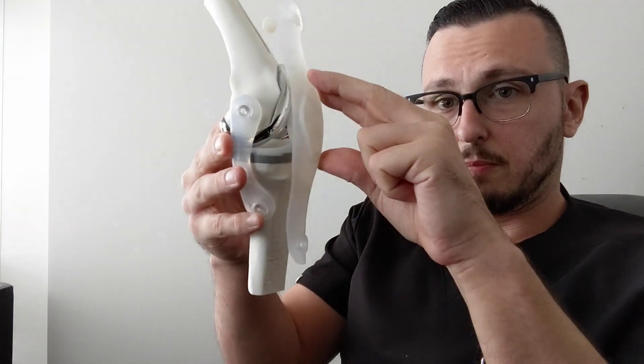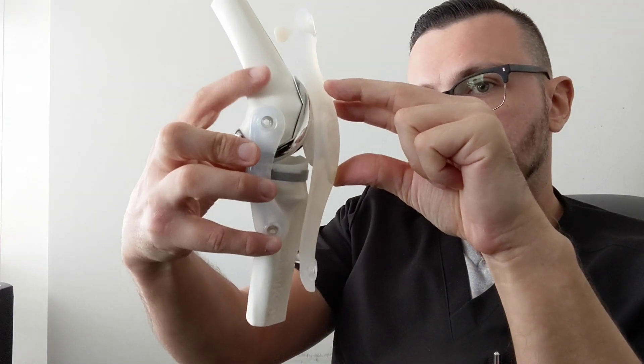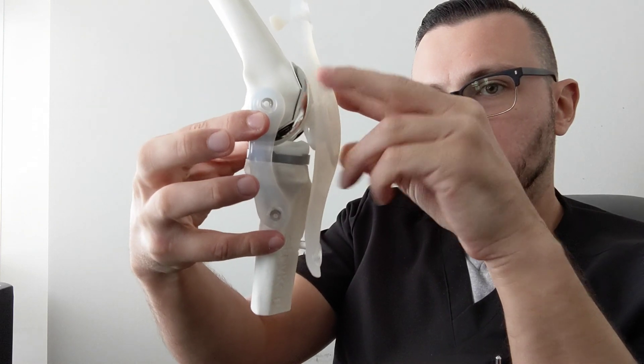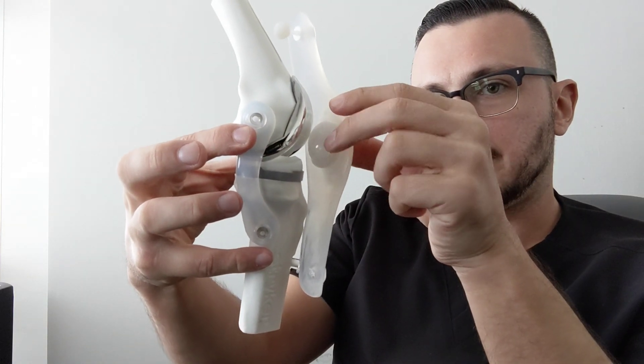A knee replacement is, I have a model here, but here's a model of the knee with the knee replacement in place. So this is the femur or your thigh bone. This is your tibia, which is your leg bone. And then this is your kneecap in the front of the knee.